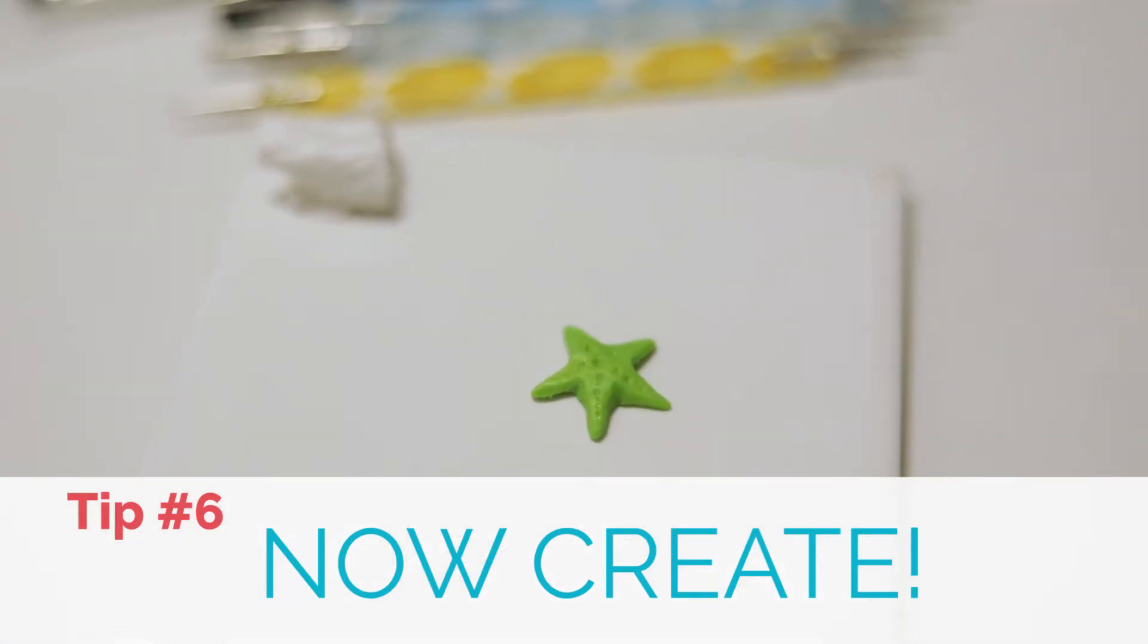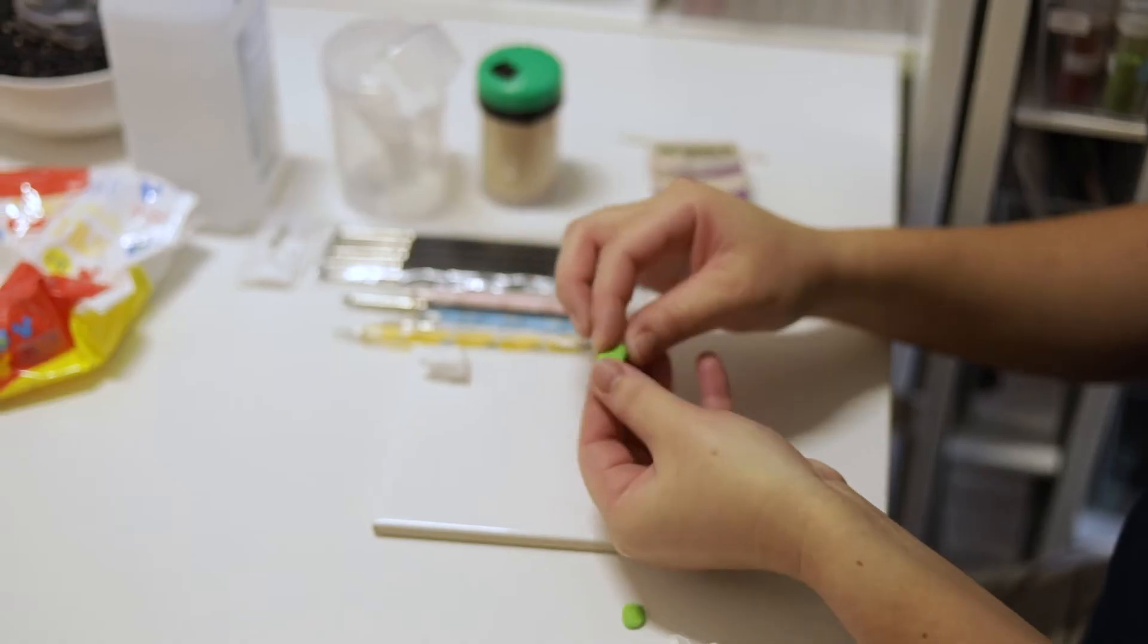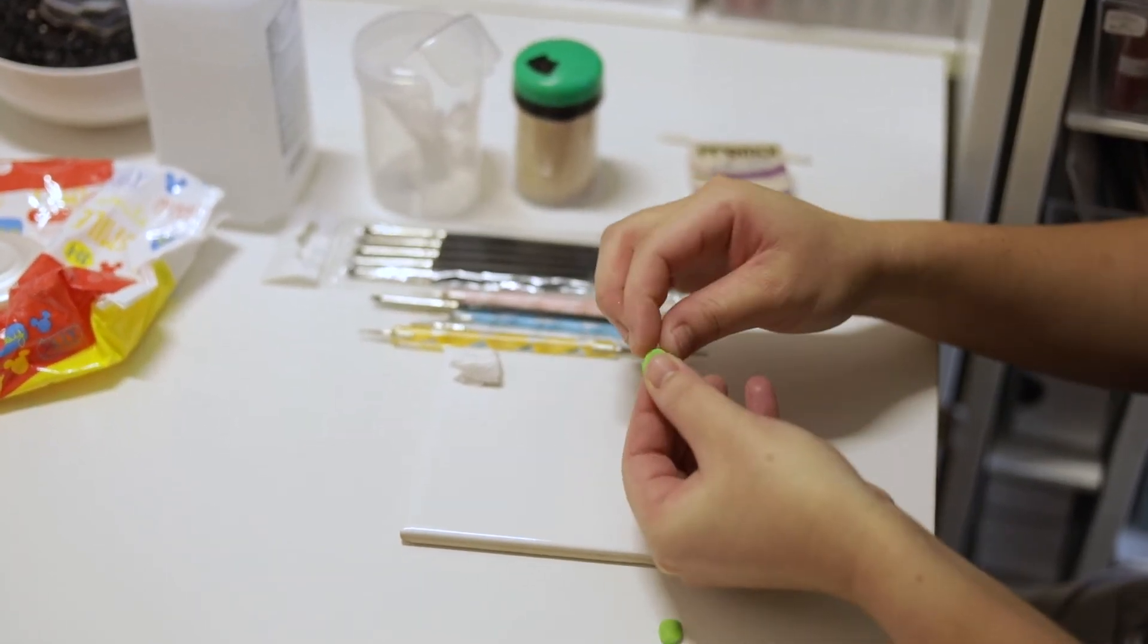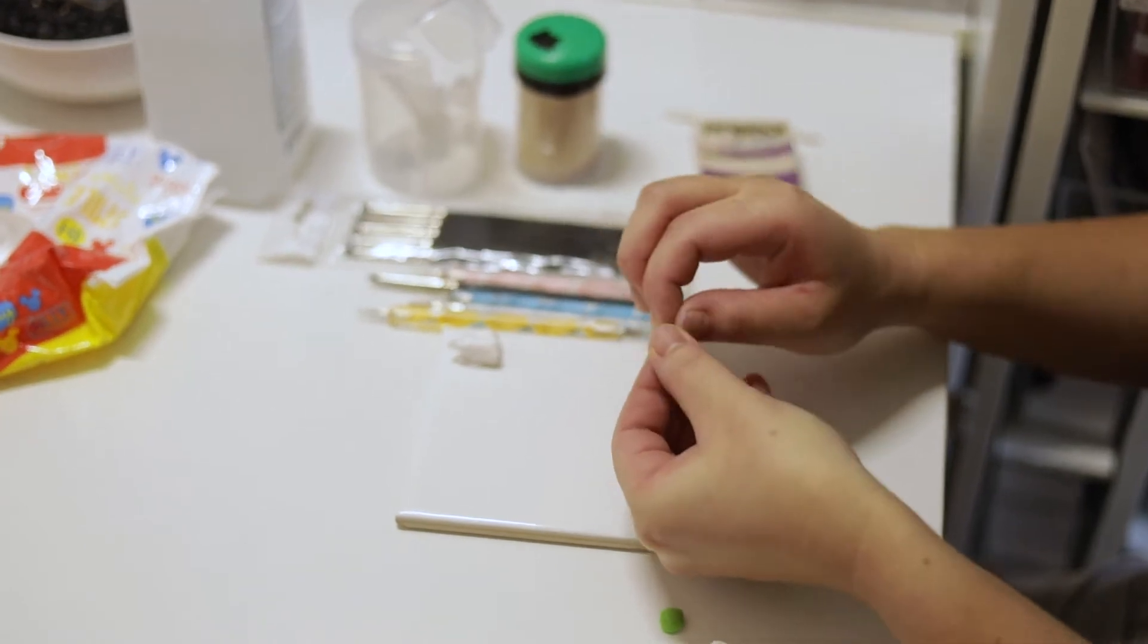Using all of these beginner tips that I've shown you, we're gonna make a cute little simple starfish. So I just have some green clay here and we're just gonna pinch out five little tips.